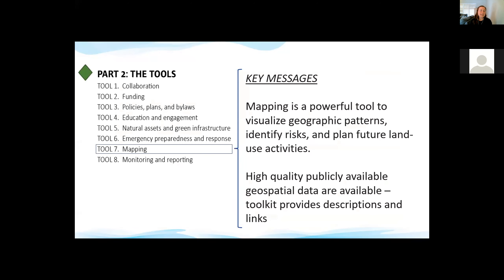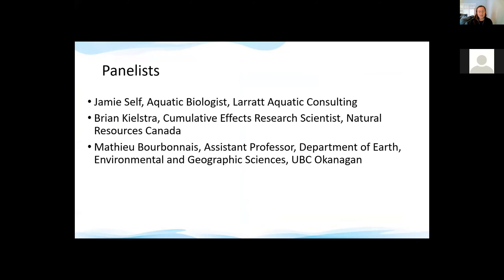The key messages in the toolkit about this tool are that mapping is a powerful tool to visualize geographic patterns, identify risks, and plan future land use activities. There are high-quality, publicly available geospatial data that can be used for source water protection, and the toolkit provides descriptions and links to these data.